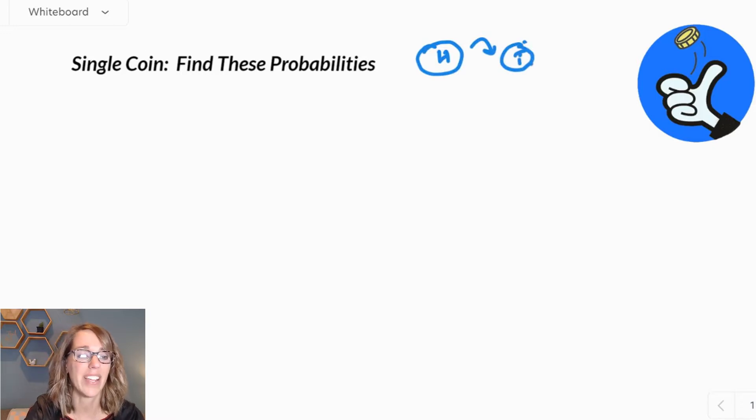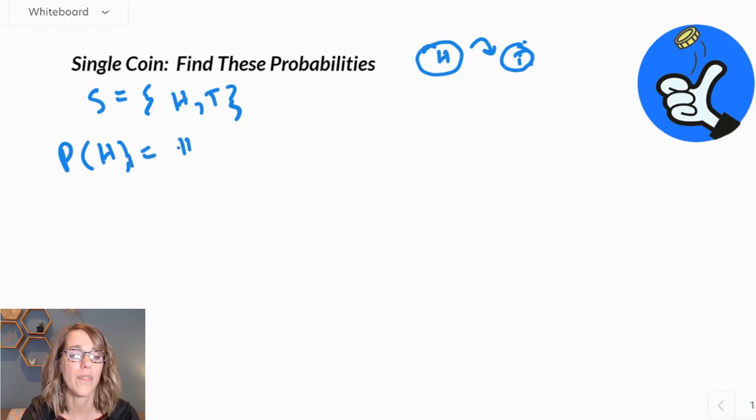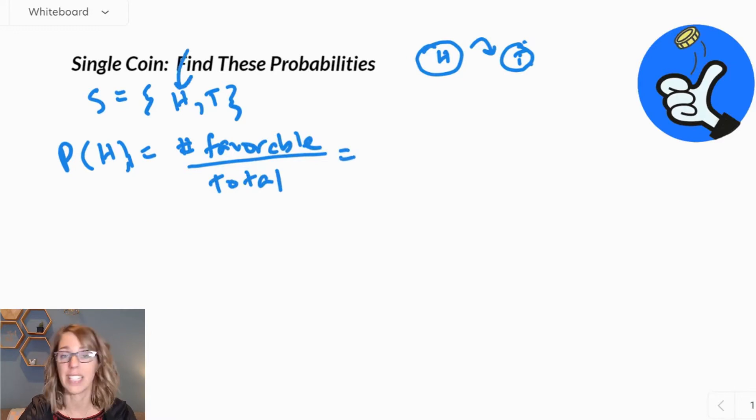This gives us a really nice, easy sample space. So my sample space consists of two possible outcomes, either heads or tails. If I do some probabilities, the probability of heads is going to equal the number of favorable outcomes divided by the total number of outcomes. So in this case, I have heads, which is a single favorable outcome, one out of two total outcomes. So that would be 0.5 if we divide, or 50%.